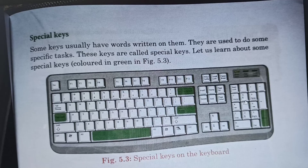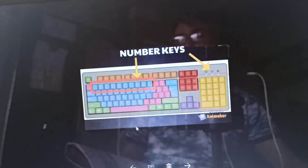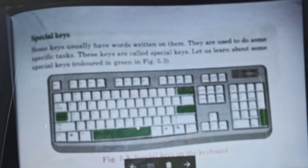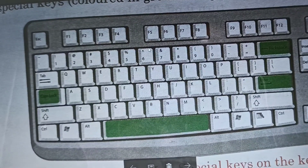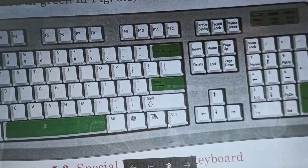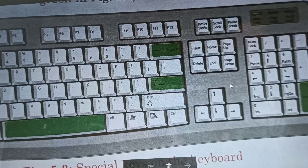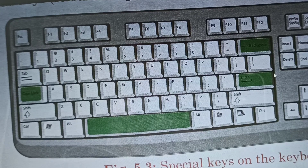Let us learn about some special keys colored in green in figure 5.3. Here you can see some special keys colored in green: the caps lock key, the space bar key, the enter key, and the backspace key. These are special keys — keys which have special tasks to do.